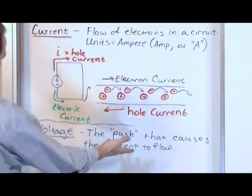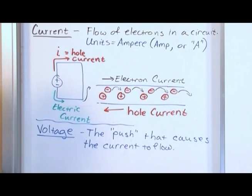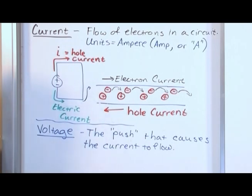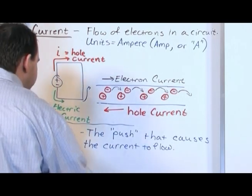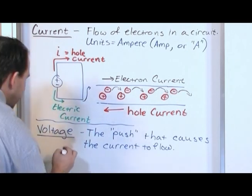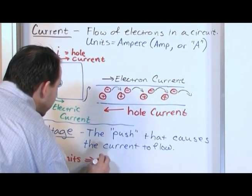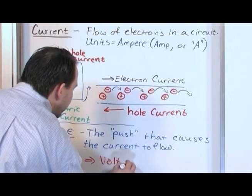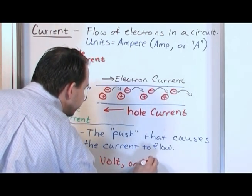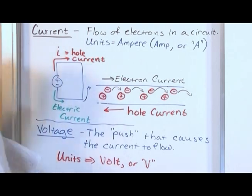So it usually comes from, or it always comes from, a battery or some kind of other source that you might get that's generated out of the wall. Now, for the units of voltage, the units is the volt, or simply call it V. So that's just the same thing as the current.